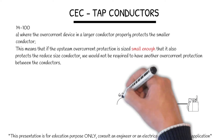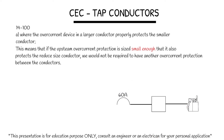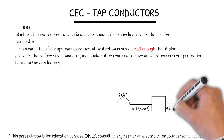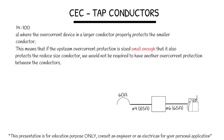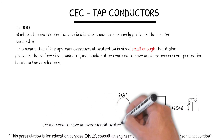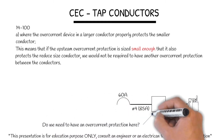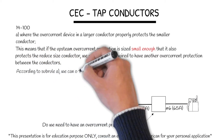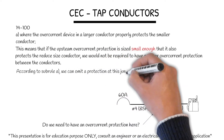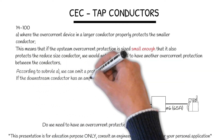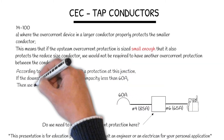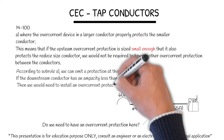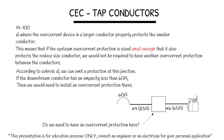Our overcurrent will be 60 amps. The main feeder will be number 4, good for 85 amps. And our load conductor will be number 6, good for 65 amps. Do we need to have an overcurrent protection here? According to Subrule A, we can omit the protection at this junction. If the downstream conductor has an ampacity less than 60 amps, then we would need to install an overcurrent protection there. So in this case, we are OK.